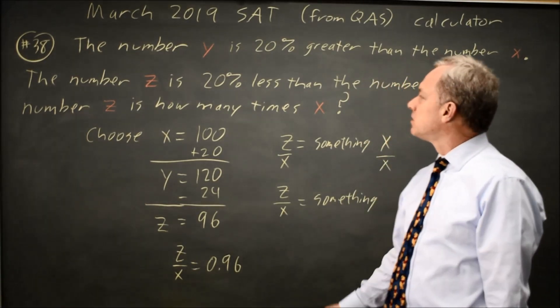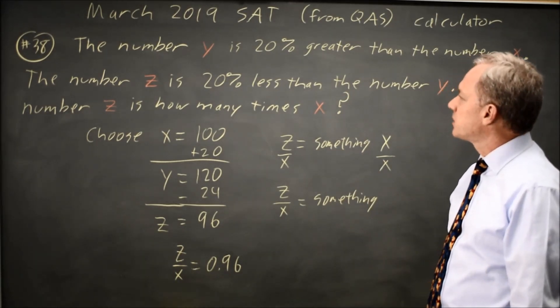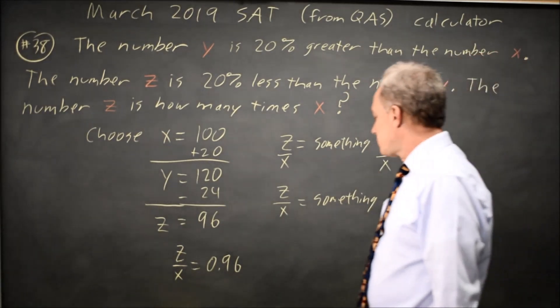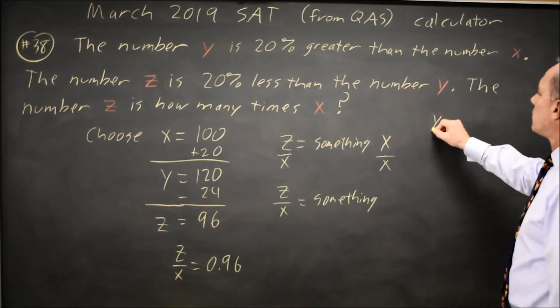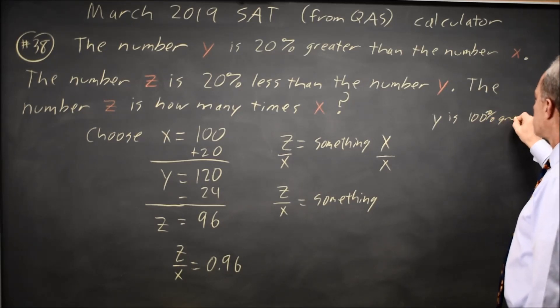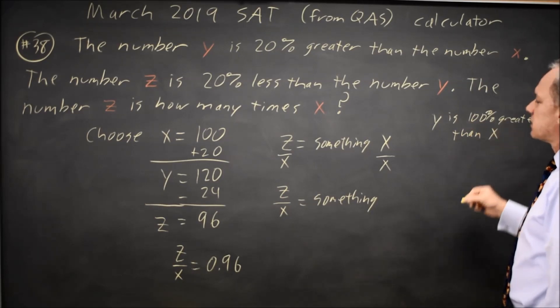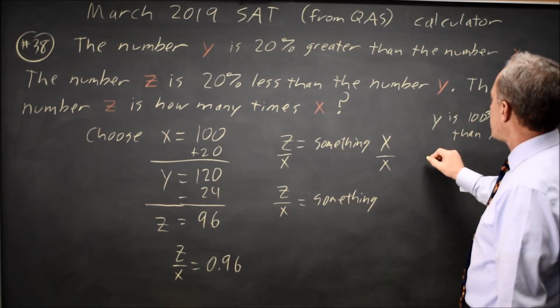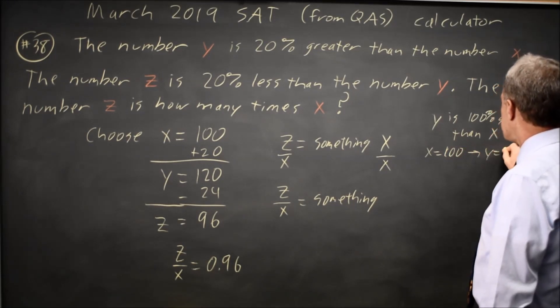If you're unsure why it should not come out the same, think about larger percentages. Suppose we made this 100% greater, Y is 100% greater than X. In that case, if X equals 100, we get Y equals 200.